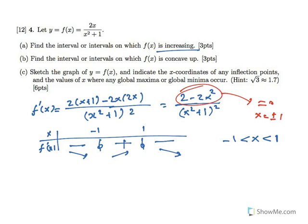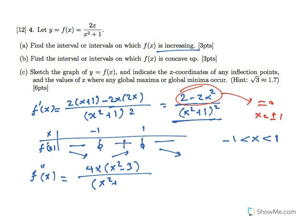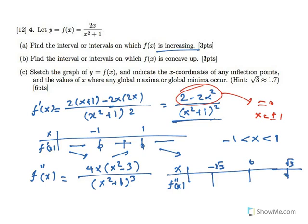To find where the function is concave up, we need the second derivative. Applying the quotient rule to the first derivative and simplifying gives the second derivative. Setting it to zero shows the second derivative equals 0 at x equals negative root 3, 0, and root 3. The sign chart gives: positive, negative, positive, negative — meaning the function is concave up when x is between negative root 3 and 0, or x is greater than root 3.